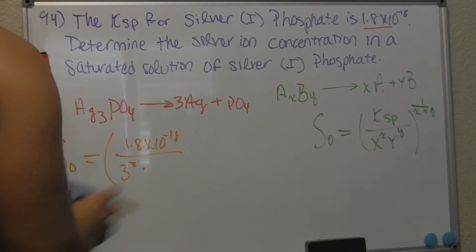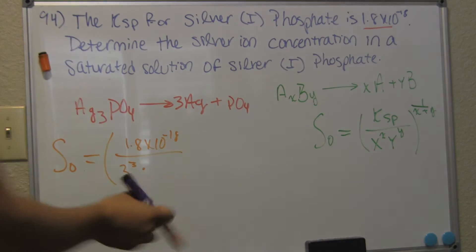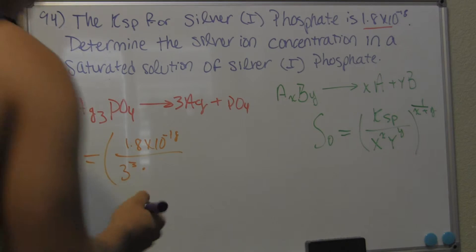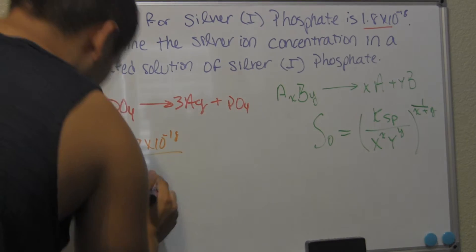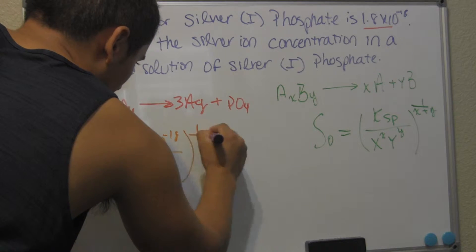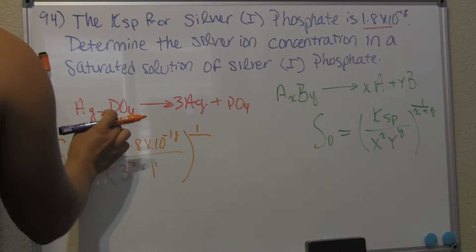All right. And then don't get confused right here. We only have one phosphate. Don't get confused by this 4 right here or that 4 over there. It's just 1 to the 1 because we only have 1 phosphate on each side. So it's 1 to the 1.